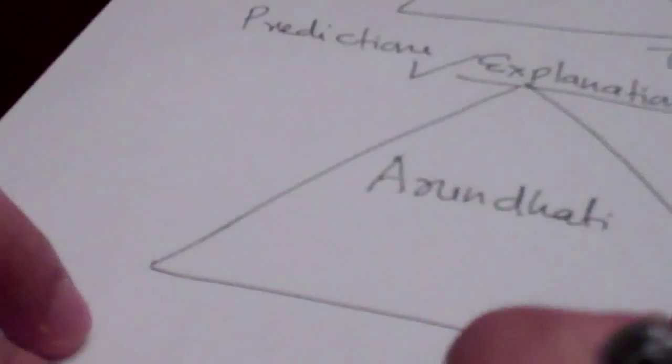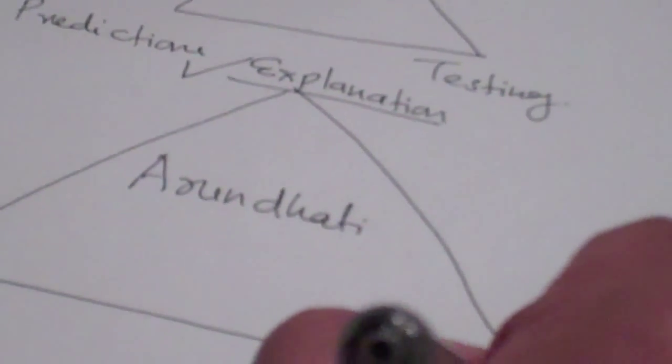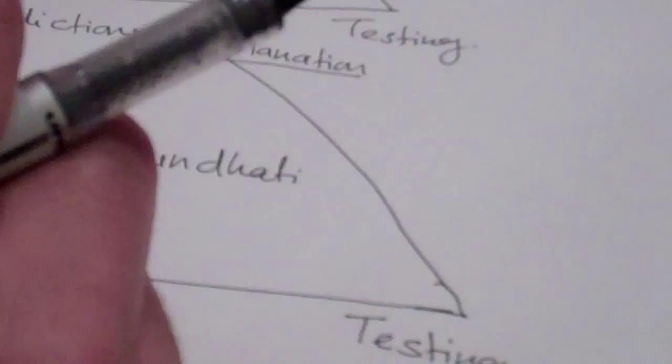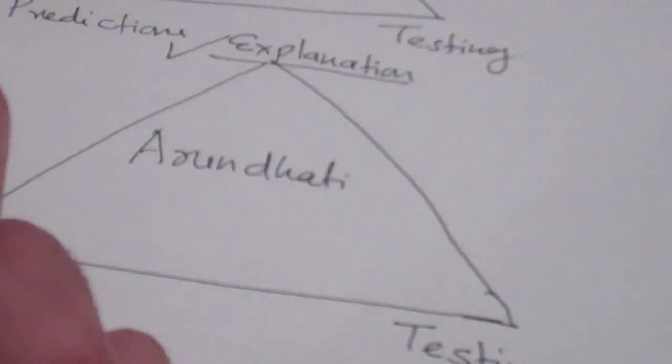Now, the goal is to find out when the Mahabharata might have happened. Right now, if you look at Arundhati and Vasishtha in the sky, you will find that in reality, Vasishtha is walking ahead of Arundhati. So what can we do?